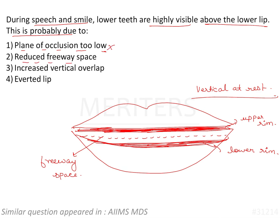Reduced freeway space — yes, that could be possible. If this freeway space is reduced, then the visibility will increase. If I reduce this gap, then the lower visibility is increasing. So this could be correct.